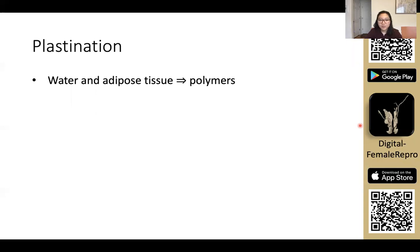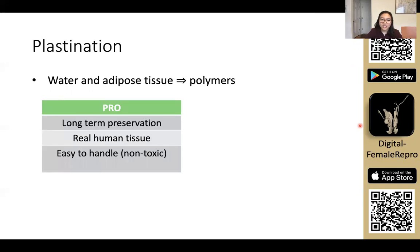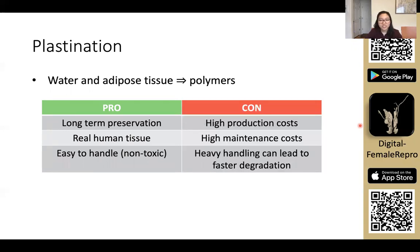Plastination is a process that replaces water and adipose tissue with polymers. This allows the long-term preservation of well-dissected cadaveric specimens. Plastinates are also non-toxic and can be handled without gloves, making them extremely convenient for students. However, there are a lot of disadvantages to plastination, such as high production costs and high maintenance costs, and ultimately this leads to a limited number of plastinates available for anatomy education.